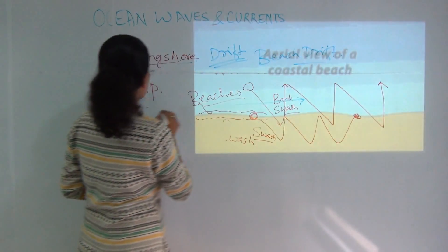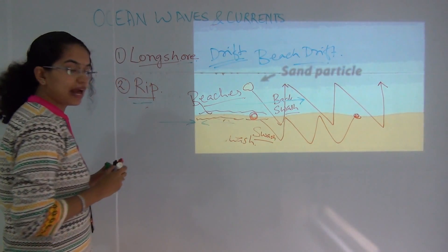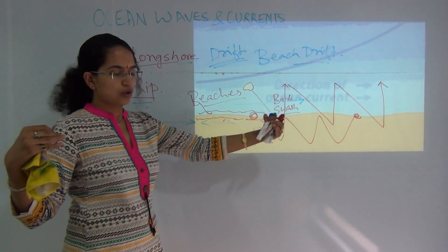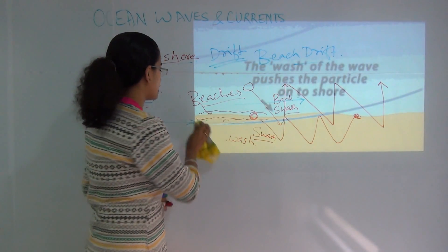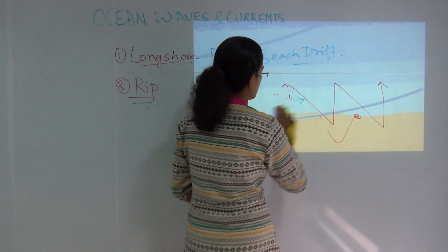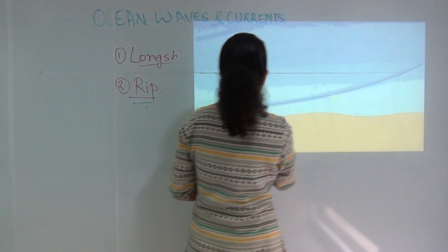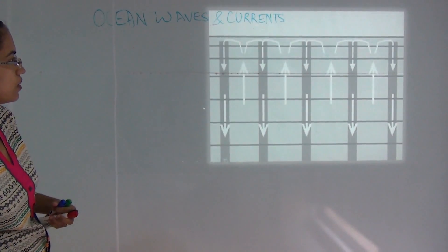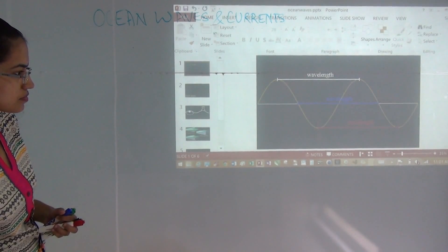Finally, we will talk about rip currents. When there are longshore currents moving parallel to the coast, in some cases two longshore currents come towards one another. Those zones become dangerous for swimmers because those are zones of rip currents.